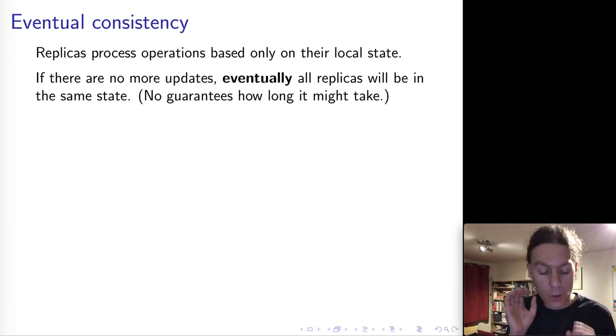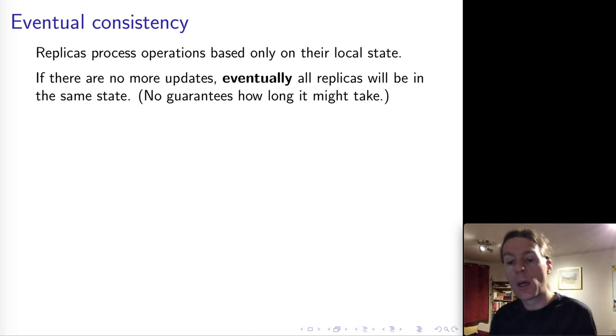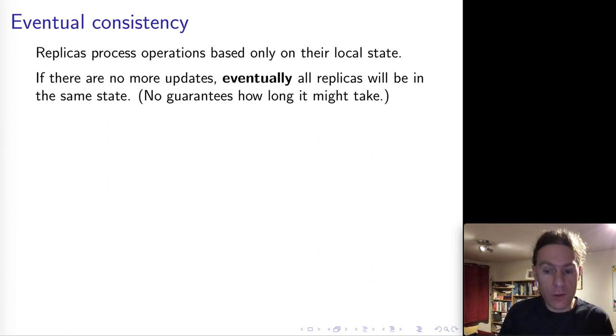This is a fundamental choice you have to make in a system where network partitions might occur. Eventual consistency is the broad category of consistency models that people move to if they don't want to make an assumption of being able to communicate with a quorum. If we want each replica to process operations just based on its local state without waiting for communication with a quorum, we cannot achieve linearizability, but we can achieve weaker consistency models. The way eventual consistency is usually defined is that any read requests a replica can process based on its local state. Whenever updates get applied to one replica, they will eventually wander over the network to other replicas.